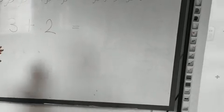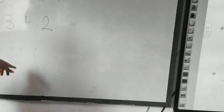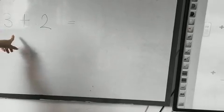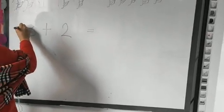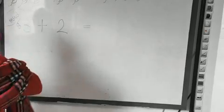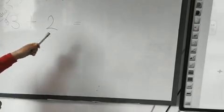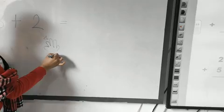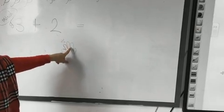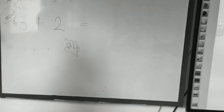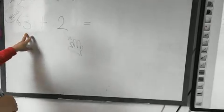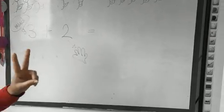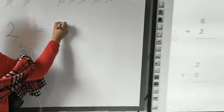Without counting, let's do it. Now, I have a greatest number and a smallest number. What is the greatest number here — 3 or 2? It's 3. So the greatest number we will put in my mind. And the smallest number I will put on my finger. I will put 3 in my mind and 2 on my finger, and say: what's the number after 3? Four, five. So the answer is 5.